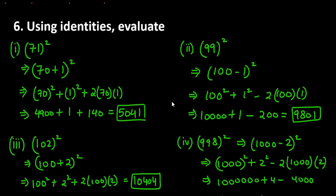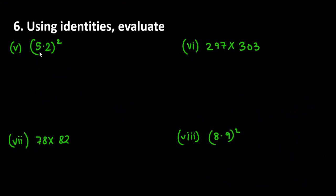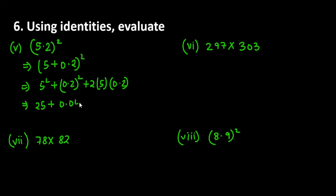The fifth part is a decimal part. It can be written as 5 plus 0.2 whole square. You can apply a plus b whole square. First term square, second term square plus 2 into ab. 5 square is 25, 0.2 square is 0.04, 2 into 5 into 0.2 is 2. Add these all and you will get 27.04.